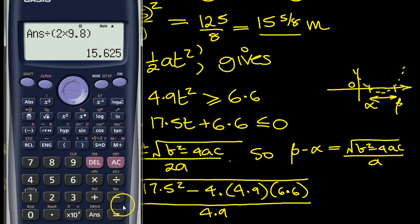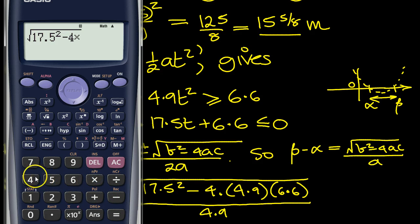So we just type this in the calculator then. Square root of 17.5 squared minus 4 times 4.9 times 6.6 equals. That's the square root. Divide that by 4.9.